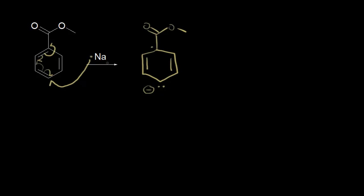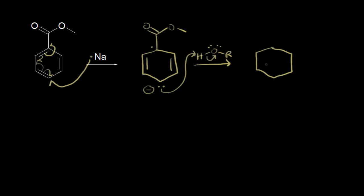If you had a hard time following those electrons, please go back and watch the previous video. In the next step of the mechanism, that's the protonation step. An alcohol comes along and we protonate our anion — these electrons pick up a proton and kick those electrons off onto the oxygen. We have pi electrons here, our ester up here, and an electron on this carbon. There was already a hydrogen bonded to this carbon, and those electrons picked up a proton, so we now have two hydrogens bonded to that carbon.